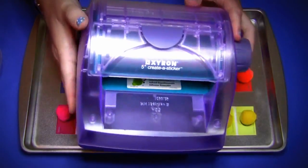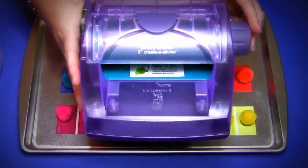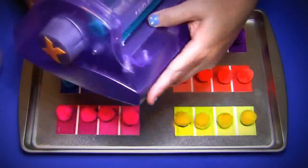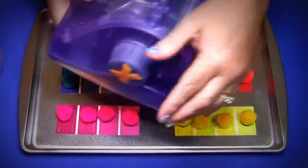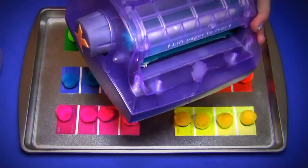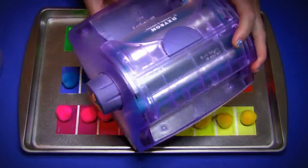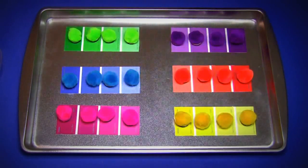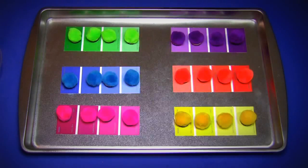This is the Xyron sticker maker machine that we use. There's a cartridge inside and the pieces come out the back once you roll them. It's very inexpensive, about $20, and the cartridges are about $10 but they last for a while.